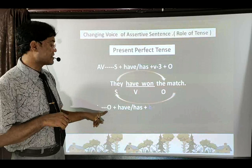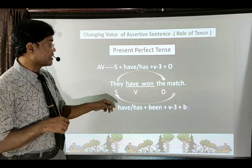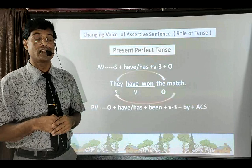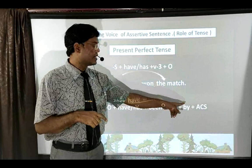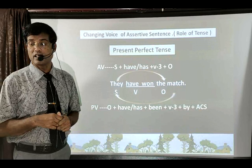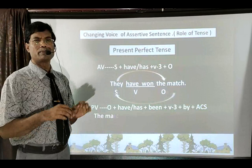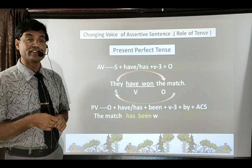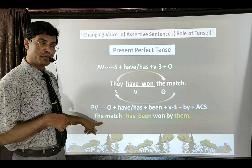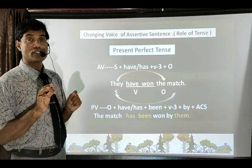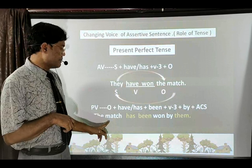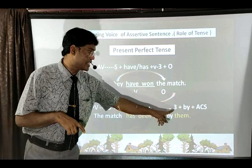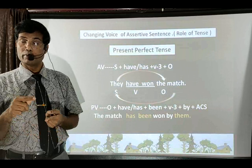In Present Perfect passive voice: subject is replaced by object, then choose have/has according to the object, then extra word 'been' is added (important!), then third form of verb, then 'by' with the objective case of the subject. Applying this: 'The match' (object) + 'has' (match is singular) + 'been' (extra word) + 'won' (third form already available) + 'by them'. So: 'The match has been won by them'.